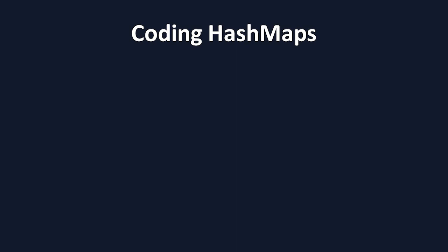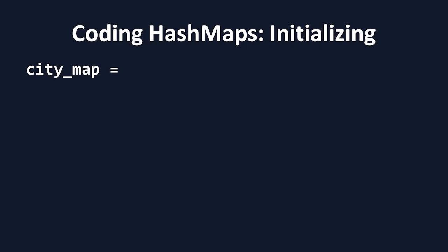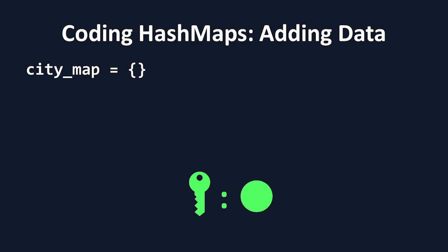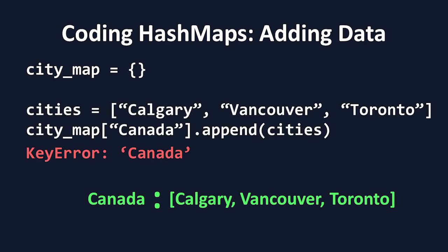It's time for us to look at how HashMaps are actually implemented. In many languages, HashMaps have different names. When it comes to Python, HashMaps are called dictionaries, but I generally refer to them as HashMaps anyway. We first create a HashMap by initializing it — let's call ours CityMap. We can initialize it in either of these two ways. Now let's add our first key-value pair. I want to add in Canada as a key, and have an array of cities as values.